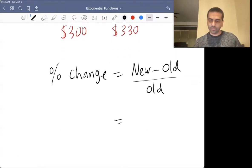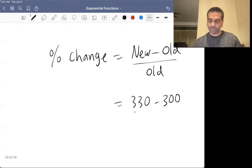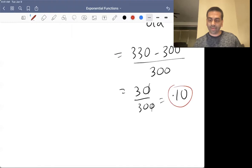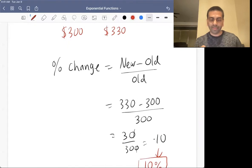So let's do this. So new minus old, that's just the change. The change, the 330 minus 300, that's how much you grew by over the original amount that you started with 300. So that's going to be grew by $30 over 300. So that's just going to be one tenth. So 0.10.